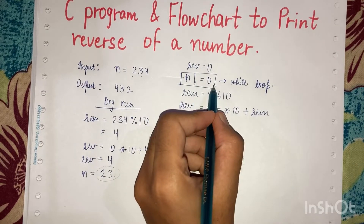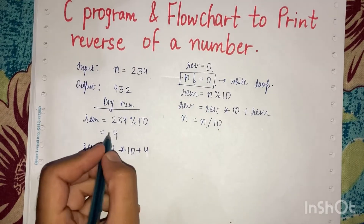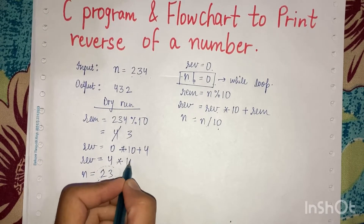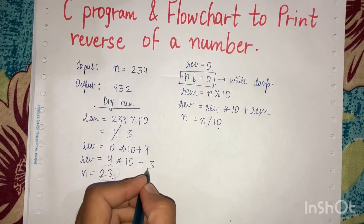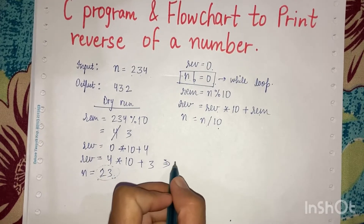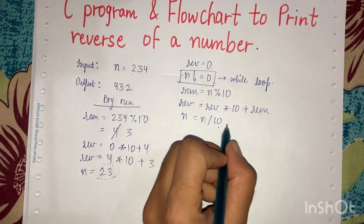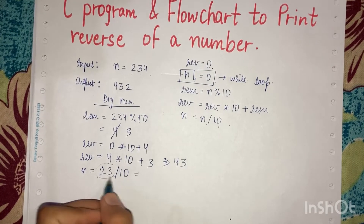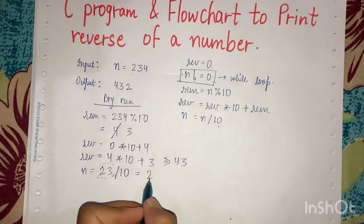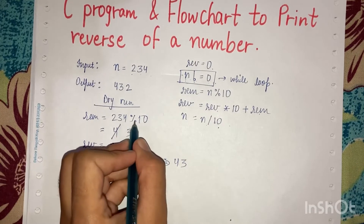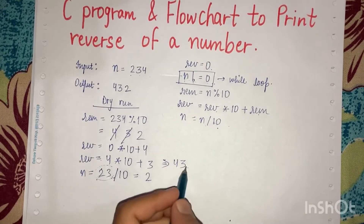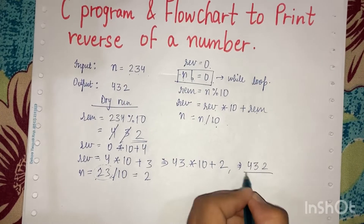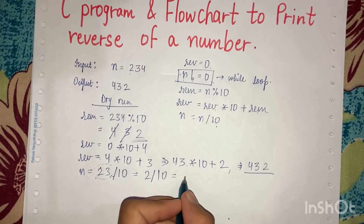Again the condition is checked: 23 not equals to 0 — condition true. Remainder = 23 modulus 10 = 3. Rev = 4 * 10 + 3 = 43. Then n = 23 / 10 = 2. Now n is 2, 2 not equals to 0 — condition true. Remainder = 2 modulus 10 = 2. Rev = 43 * 10 + 2 = 432.